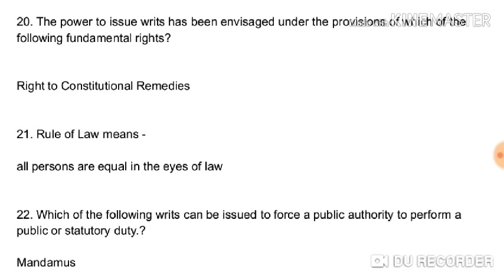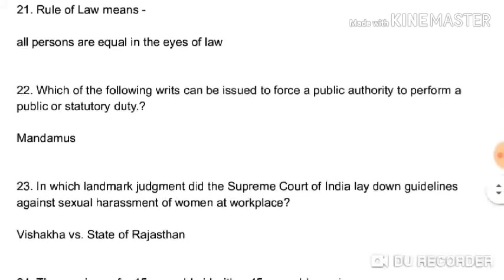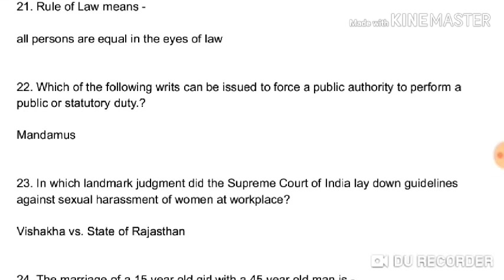The power to issue writs has been envisaged under which fundamental right? Right to Constitutional Remedies. Article 32 is before the Supreme Court for infringement of fundamental rights, and Article 226 is before the High Court for infringement of fundamental rights as well as legal rights. Rule of law means all persons are equal in the eye of law. Mandamus can be issued to force a public authority to perform a public or statutory duty.